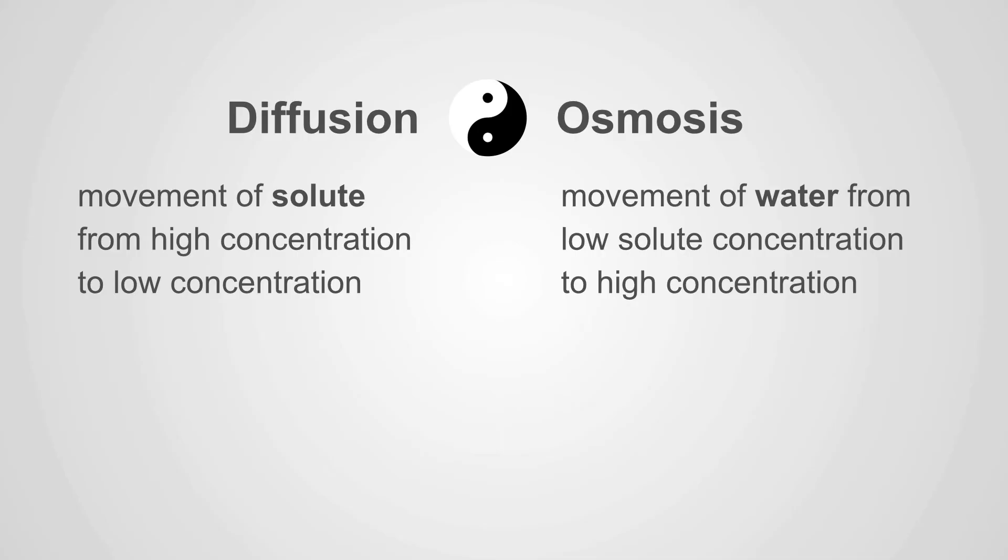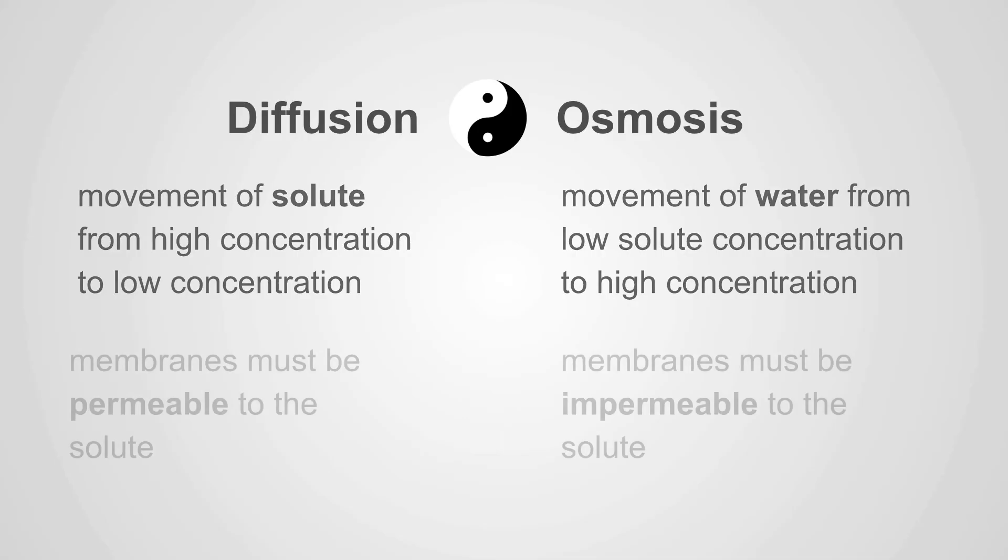In osmosis, you have movement of water from low solute concentration to high solute concentration. In diffusion, the membranes must be permeable to the solute, while in osmosis, the membranes must be impermeable to the solute.